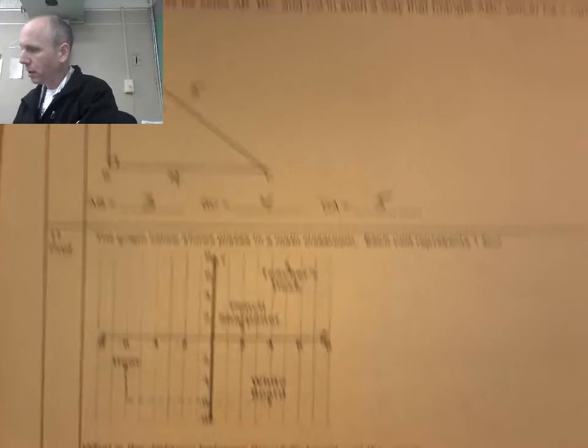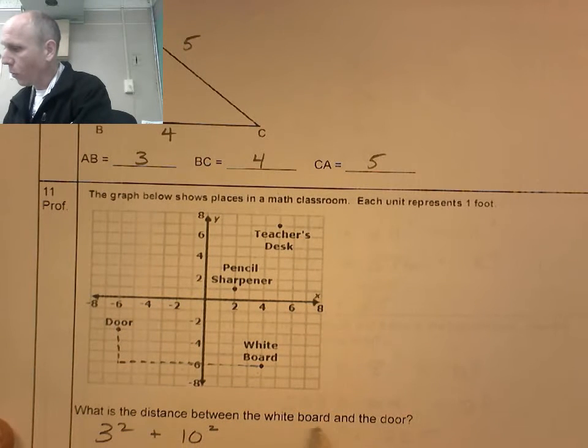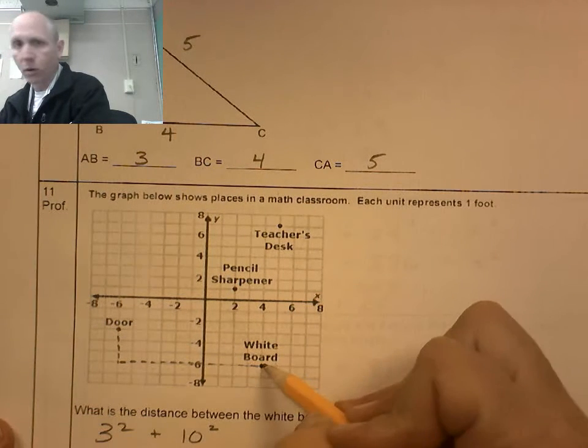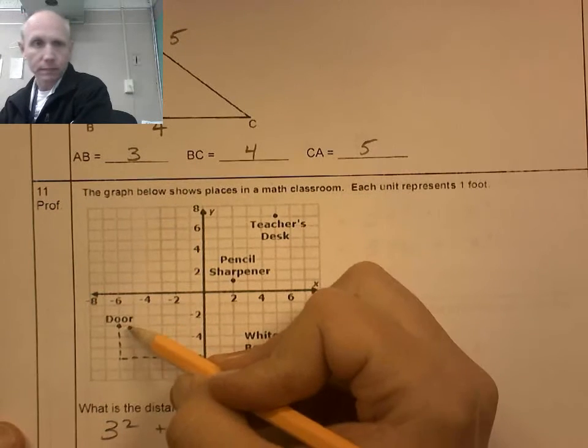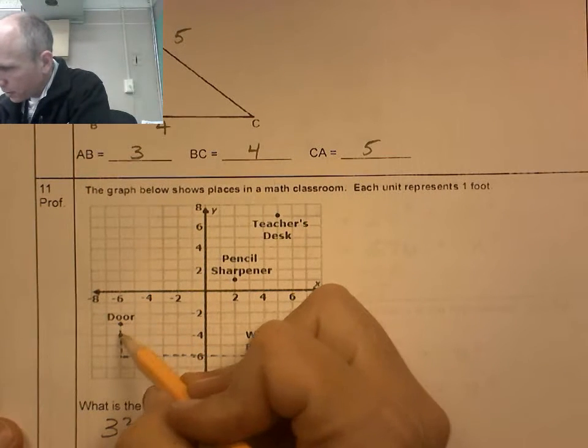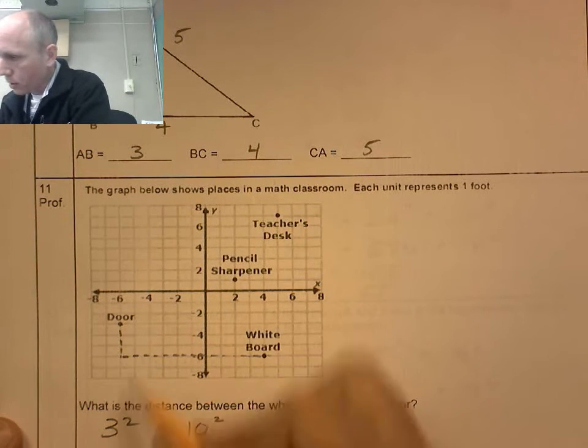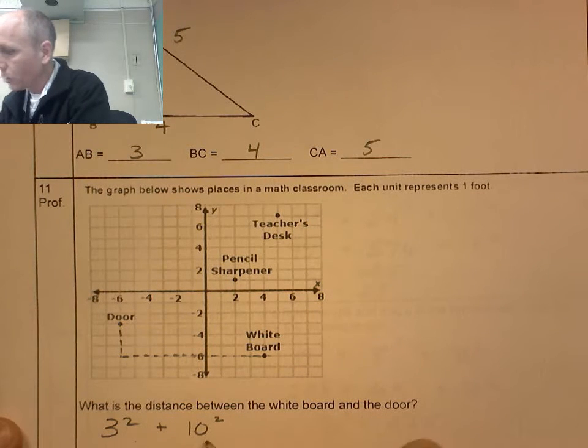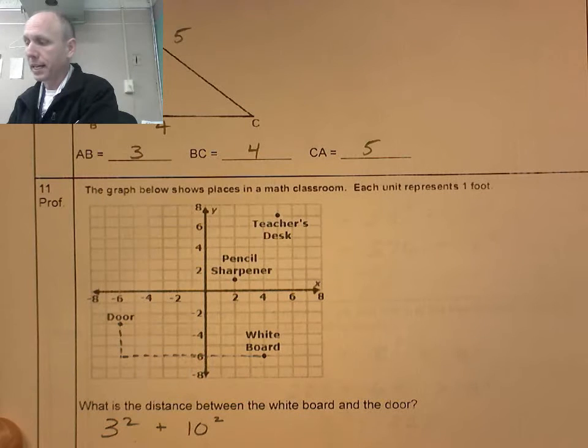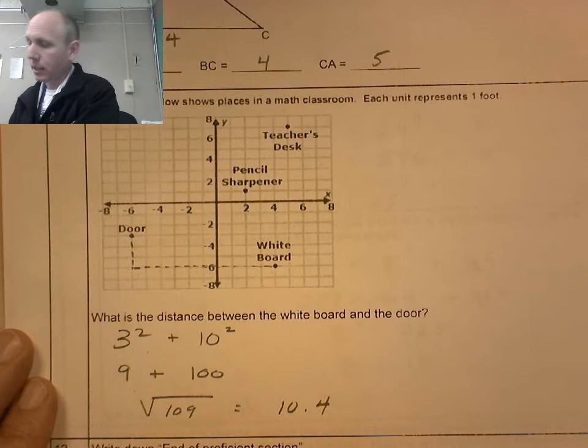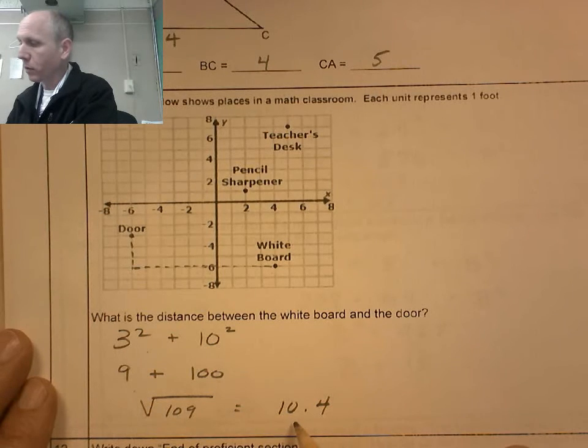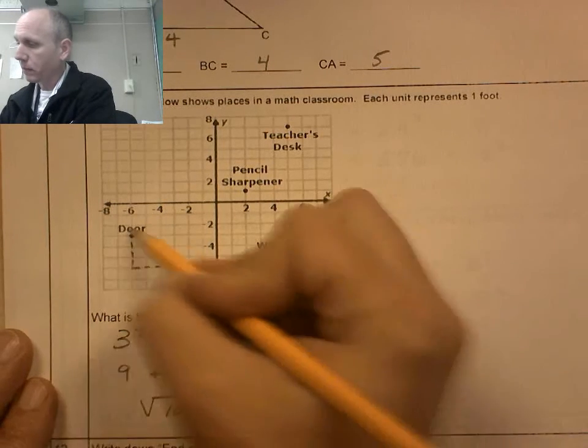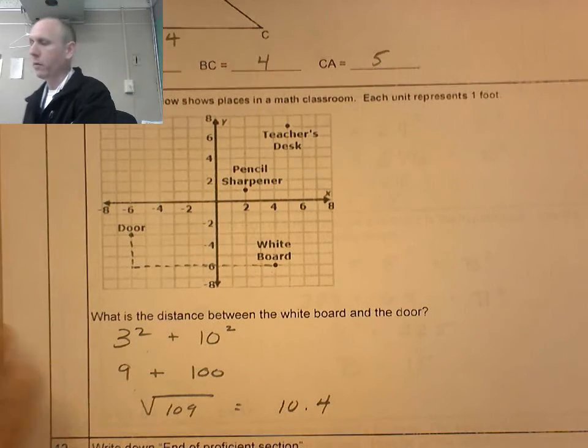The graph below shows a math classroom. What is the distance between the whiteboard and the door? So here's the whiteboard. There's the door. That's 1, 2, 3, so 3 squared. 1, 2, 3, 4, 5, 6, 7, 8, 9, 10 squared. So 3 squared, which is 9, plus 10 squared, which is 100. So I took the square root of 109, and I got 10.4. So this distance right there is 10.4.